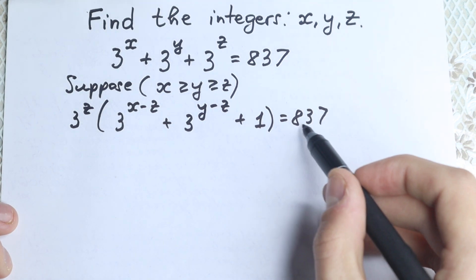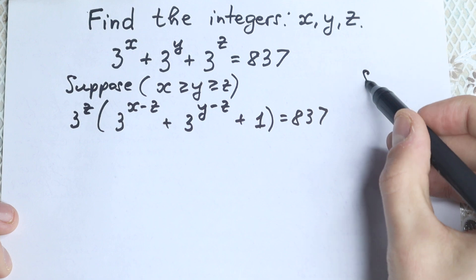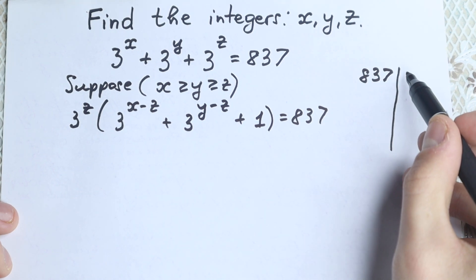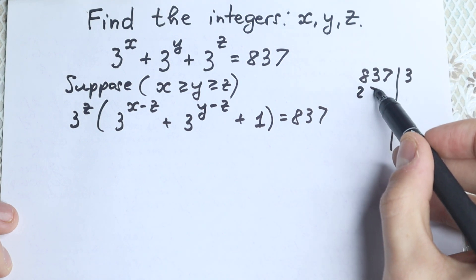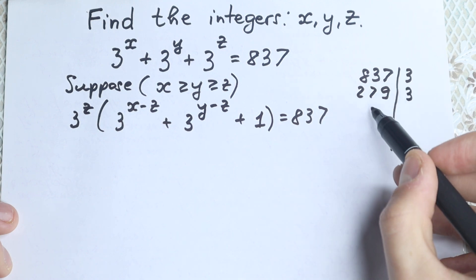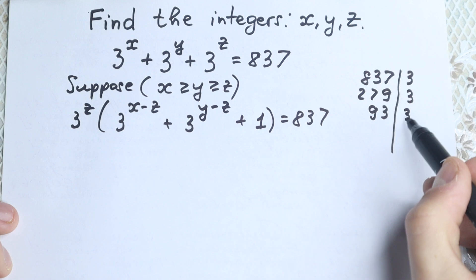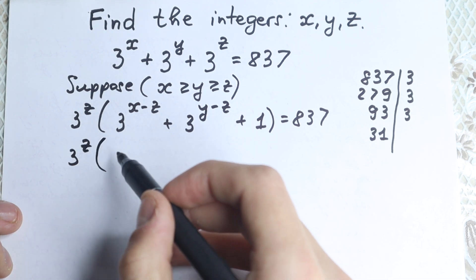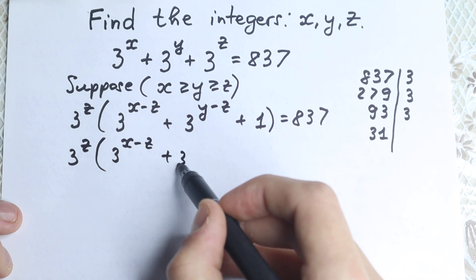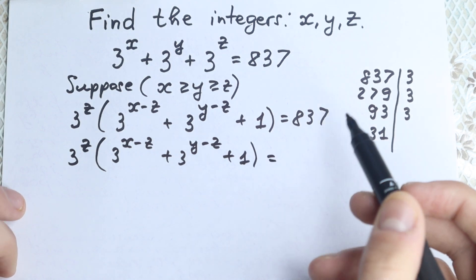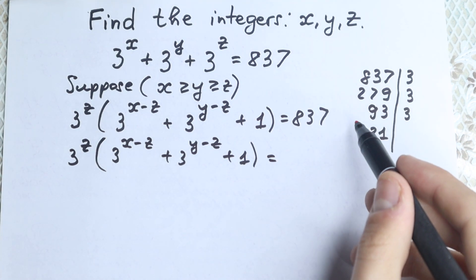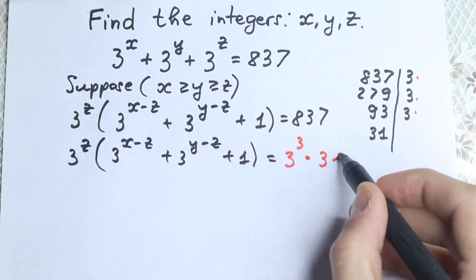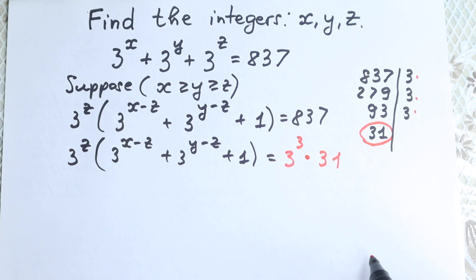The best way to solve it is to express 837 in another way. Let's divide it: 837 divided by 3 gives 279, divided by 3 again gives 93, divided by 3 again gives 31. So we can express 837 as 3 cubed times 31. So we have 3 to the power z times the parentheses equal to 3 cubed times 31.